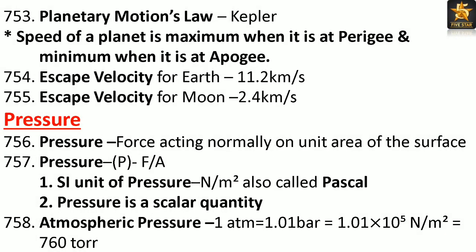Planetary motions law (Kepler): Speed of a planet is maximum when it is at perigee and minimum when it is at apogee. Escape velocity for Earth: 11.2 kilometers per second. Escape velocity for Moon: 2.4 kilometers per second.